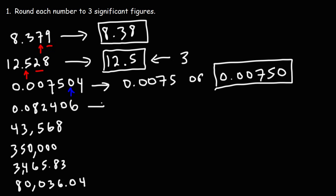Moving on to the next example: 0.082406. The 4 is the third significant digit from the left. Looking at the next one — the zero — that tells us we need to round down. So we're just going to make this 0.0824.